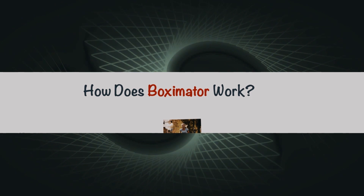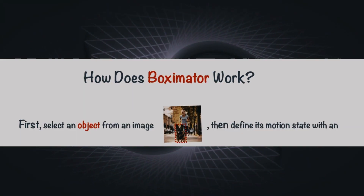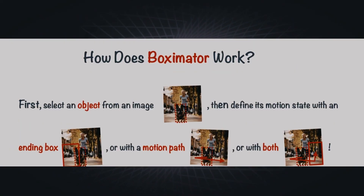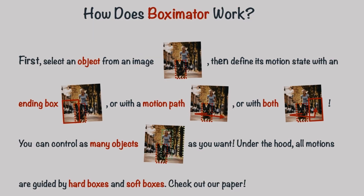So how does BoxyMater work? Exactly as stated on the site: first, select an object from an image, then define its motion state with an ending box, a motion path, or both. You can control as many objects as you want. Under the hood, all motions are guided by hard boxes and soft boxes.